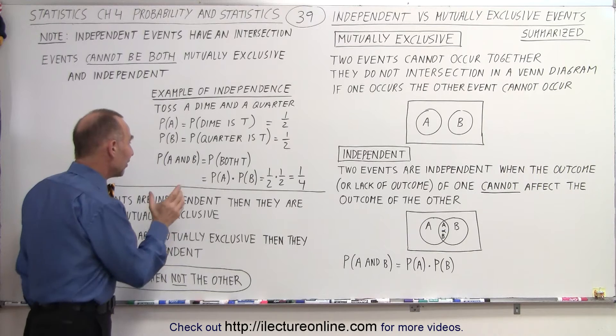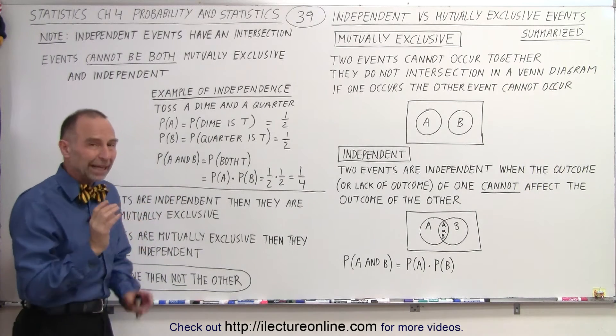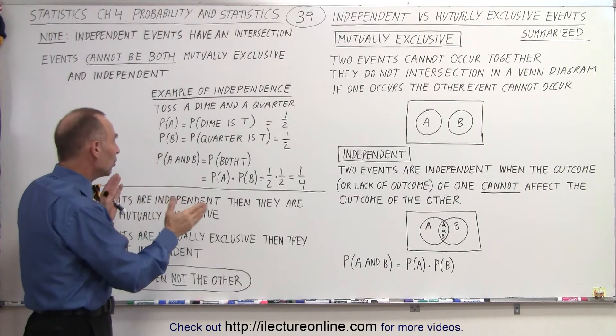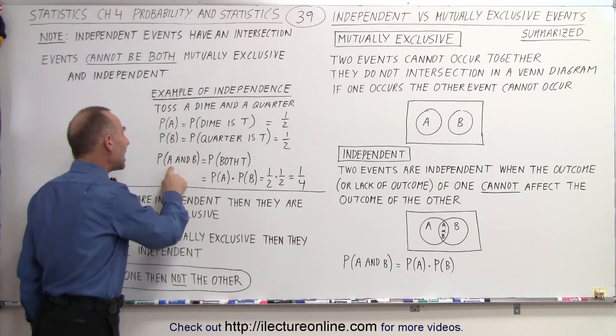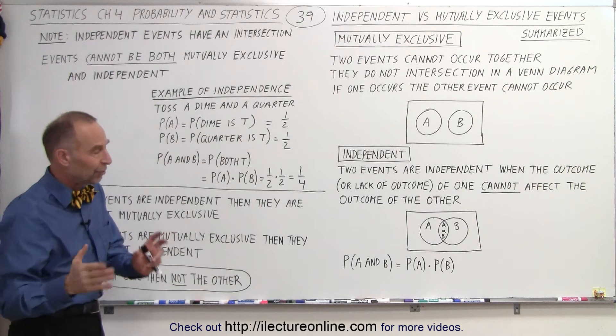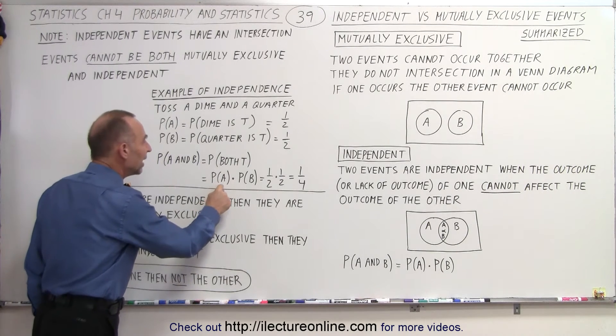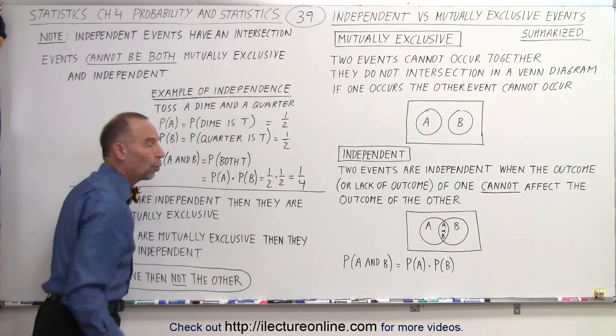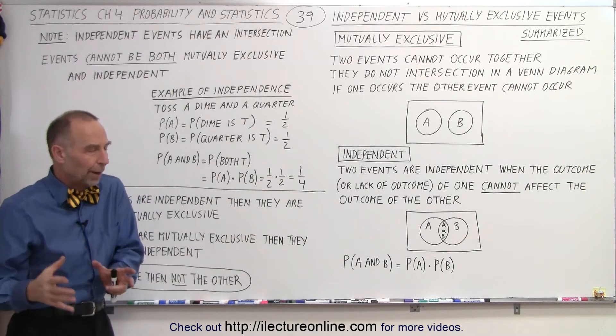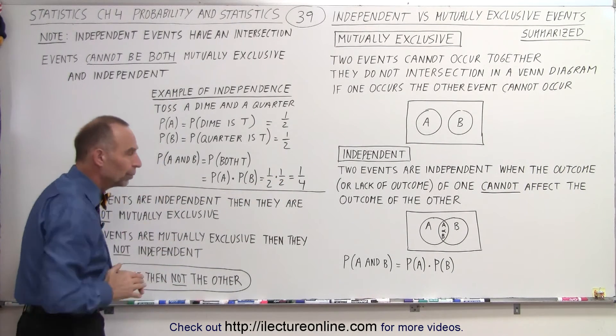And so then, if we want to find the intersection of the two, the intersection between A and B, in other words, what is the probability that both A and B are equal to tails? Then we simply have to multiply the probability of A times the probability of B. And so, one half times one half is a quarter.